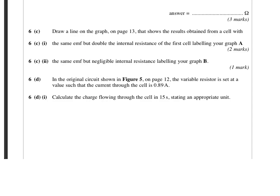For part C, I'm just going to sketch that below here. Here's our original graph. Part C, part 1 says, draw a line on the graph that shows the results obtained from a cell with the same EMF, but double the internal resistance. Well, if we've got the same EMF, but double the internal resistance, if it's the same EMF, we're going to start at the same point there. If the internal resistance is doubled, the gradient will be doubled, so we're going to have a line that's twice the gradient, twice as steep. So that would be the answer to part 1.